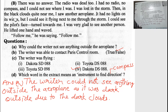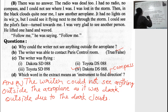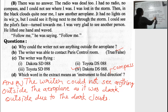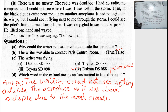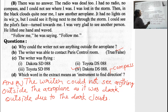B: The writer was able to contact the Paris control room — true or false? The answer is false. C: The writer was flying — what will the right answer be? Dakota DS 088. D: Which word in the extract means 'an instrument to find direction'? The direction-finding instrument shown in the extract — this was an important question.